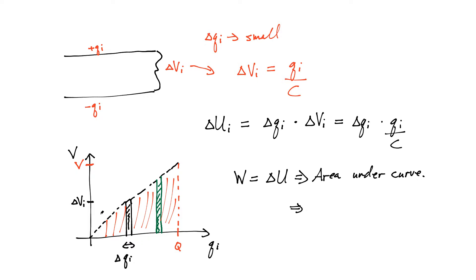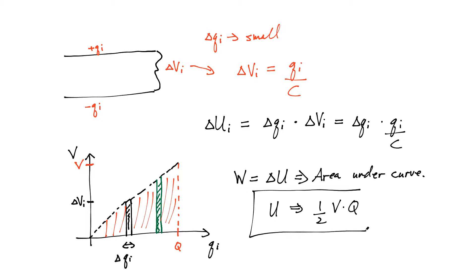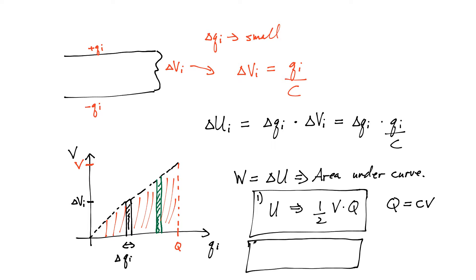The area under the curve is simply half of V times the total charge on the plates. This represents the final potential energy stored in a capacitor. You can also write this equation using different flavors, remembering our capacitor equation Q equals CV. If you call this form number one, form number two involves eliminating the voltage using the capacitor equation.